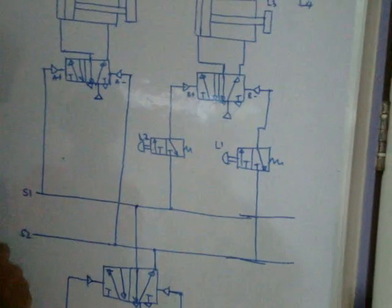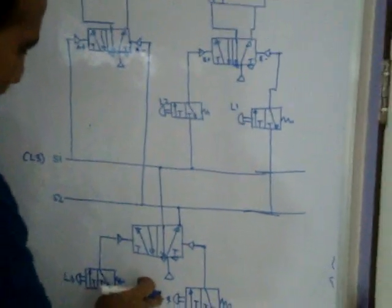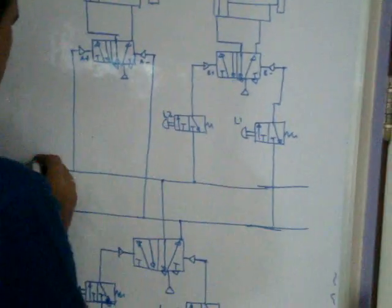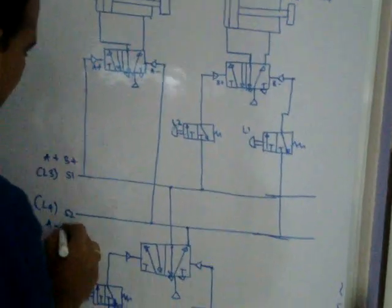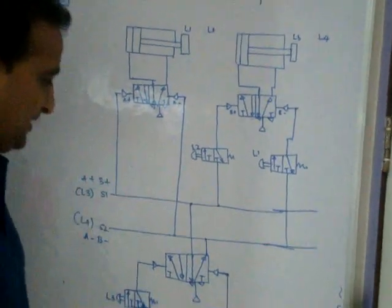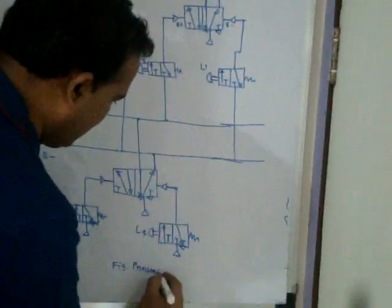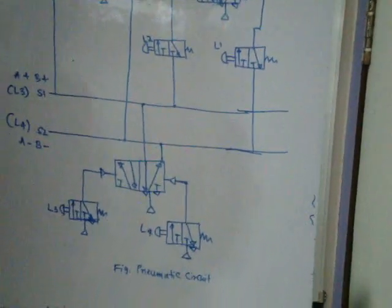When S1 is on — triggered by L3. When L4 is on — S2. When S1 is on: A plus and B plus happen. When S2 is on: A minus and B minus happen. This circuit works. This is a pure pneumatic circuit — no electrical involved. Pure pneumatic logic circuit.